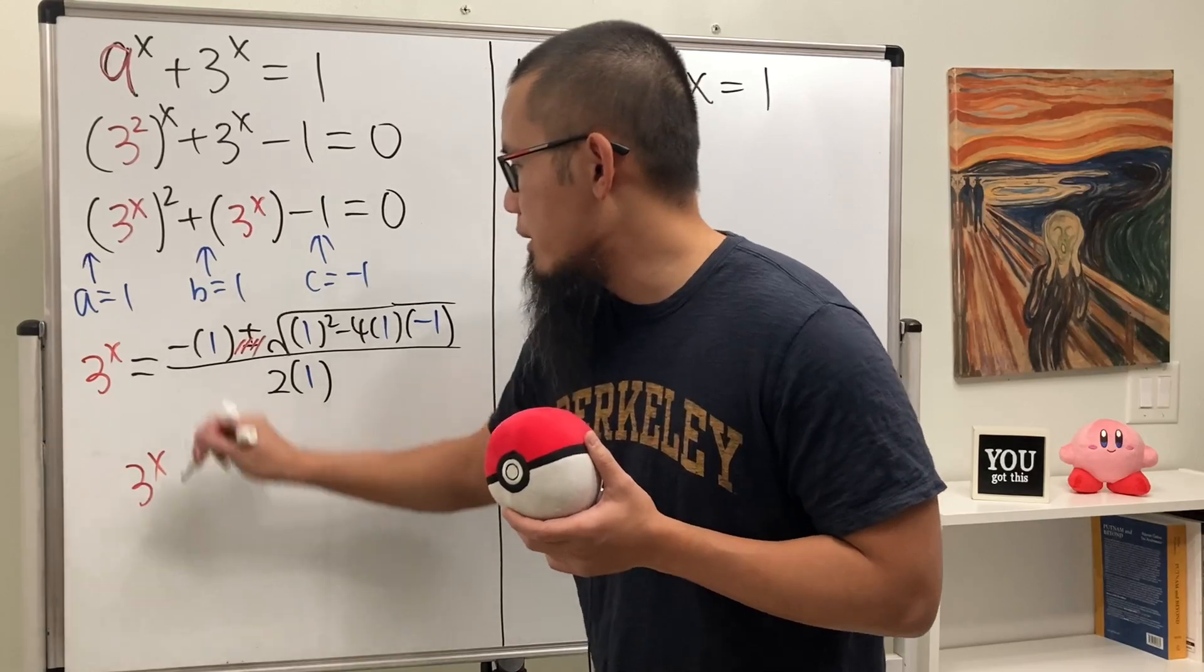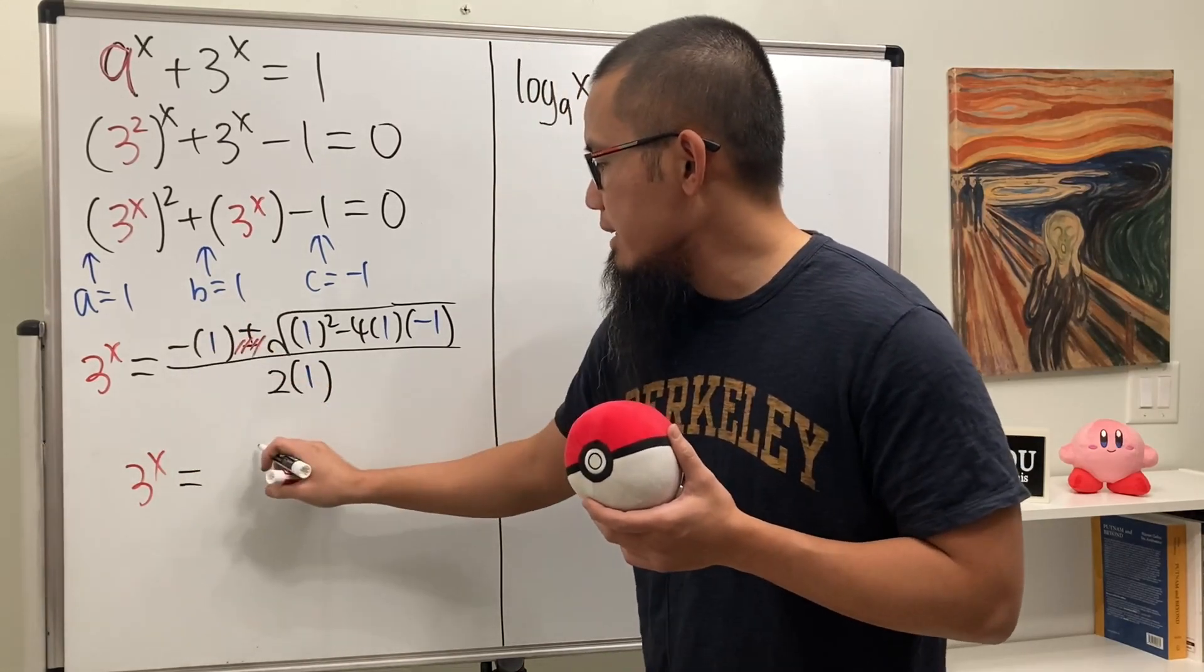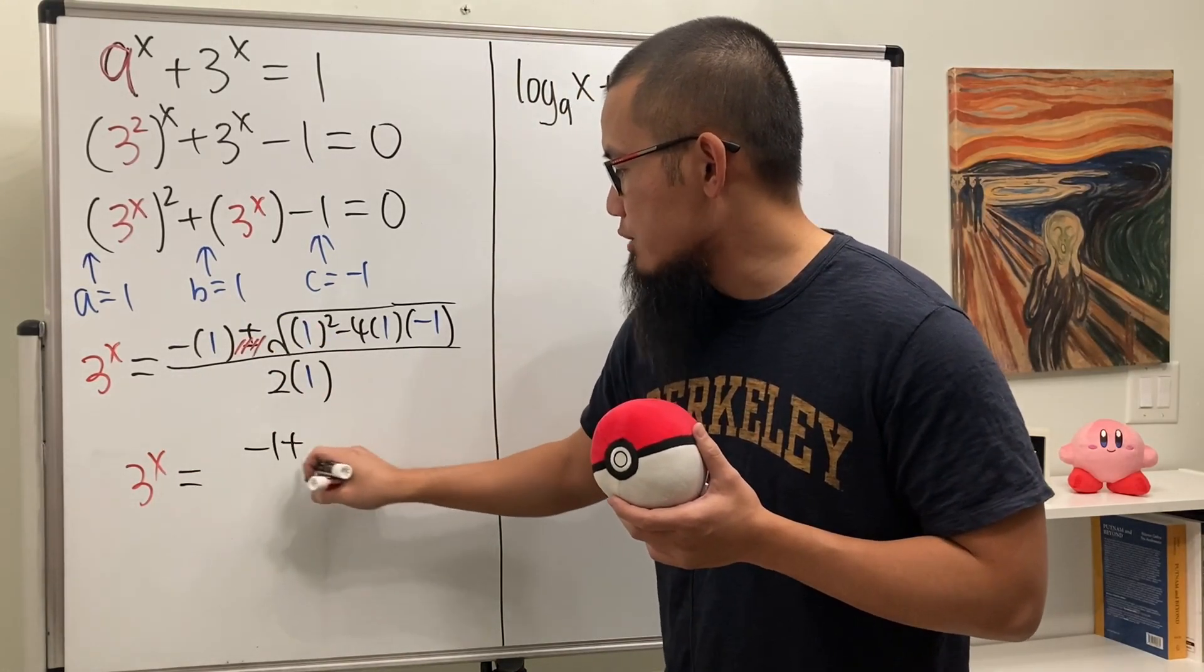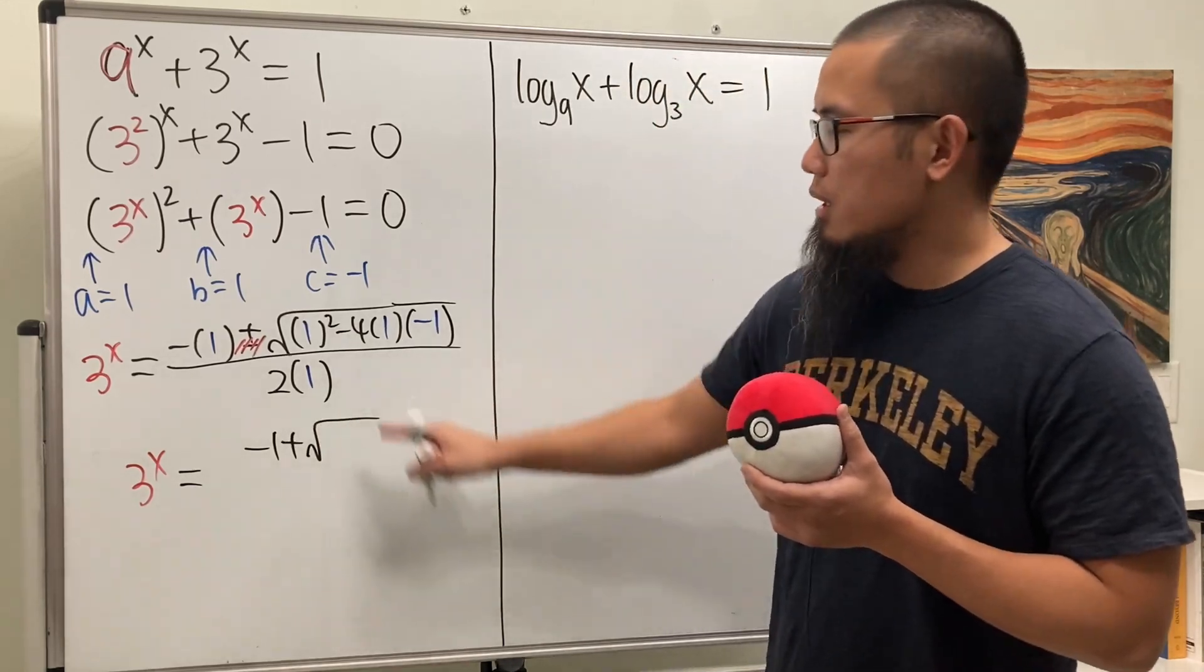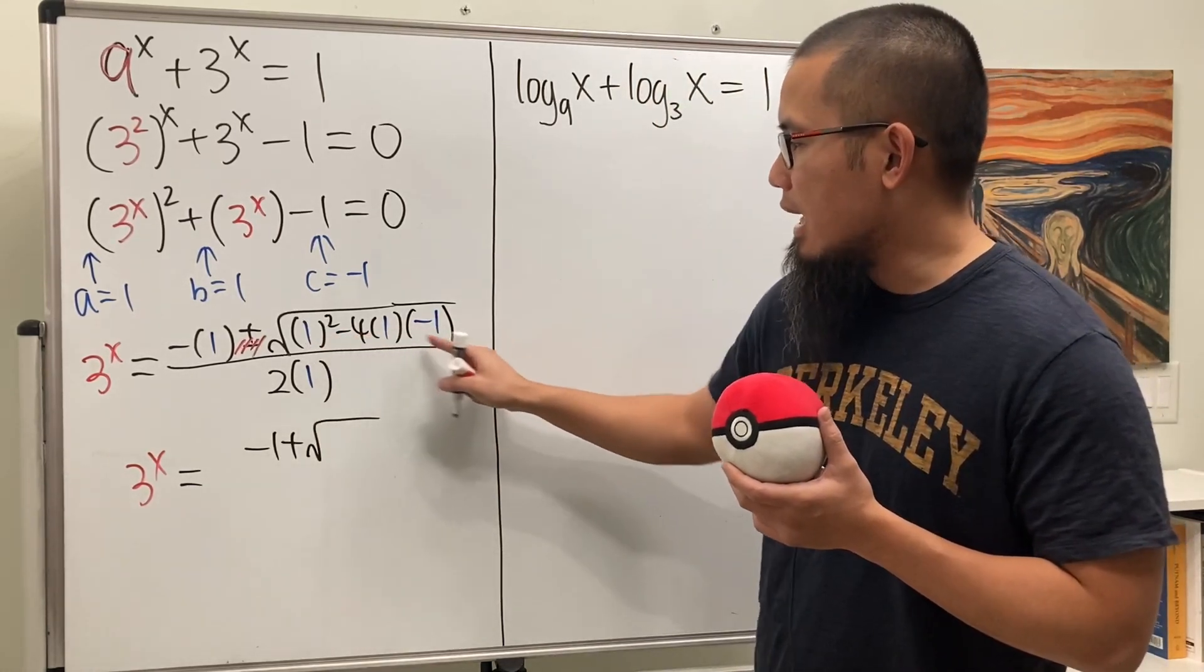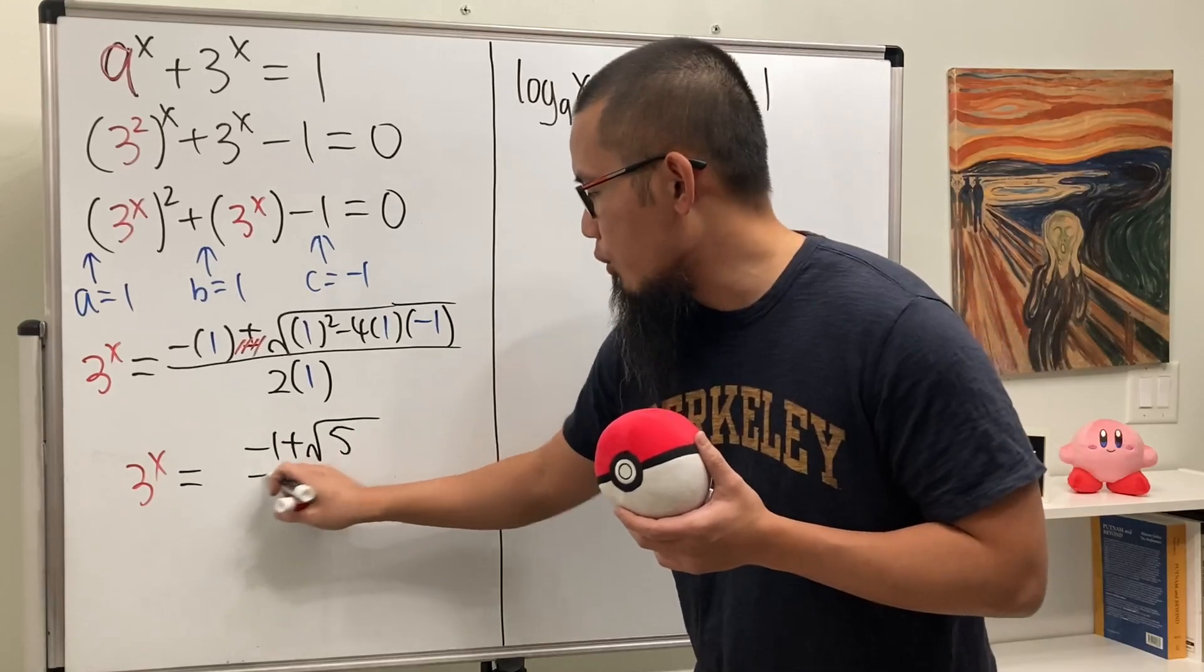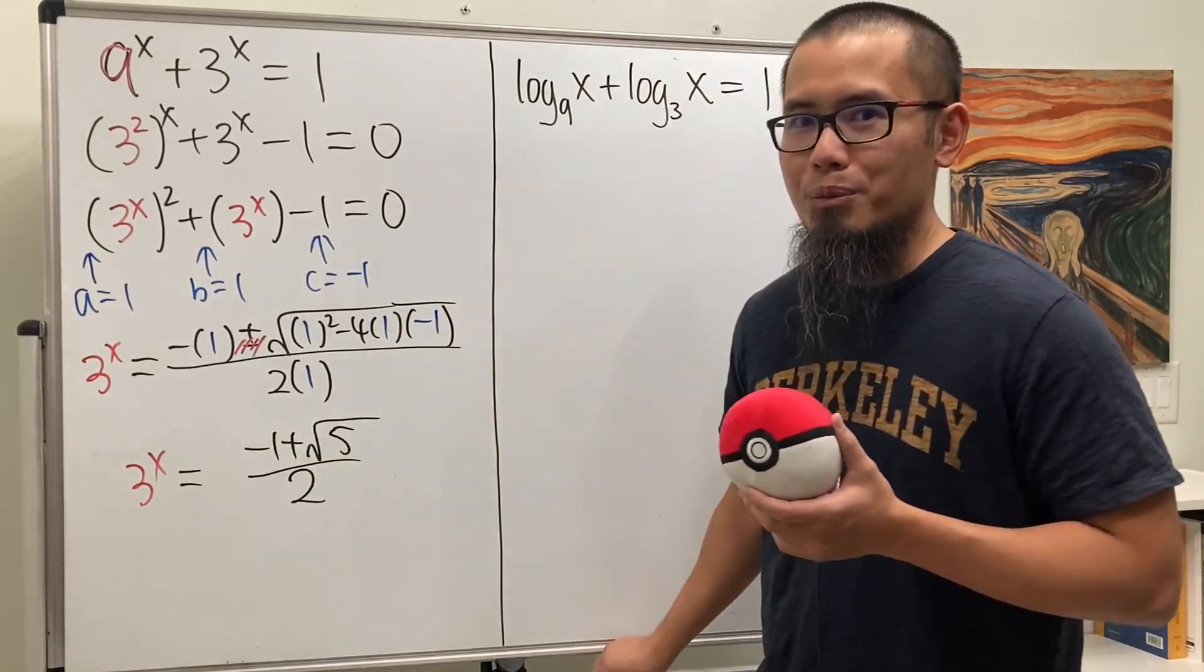We will just get 3 to the x power equal to negative 1, and then we just have the plus right here, and the square root here is just 1 plus 4 which is 5, all over 2. And we're almost done.